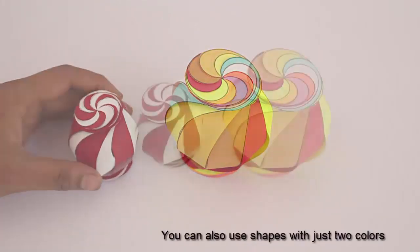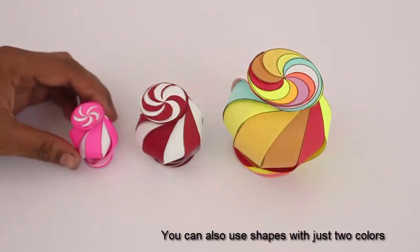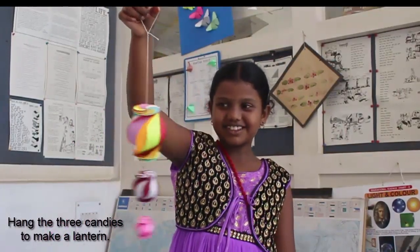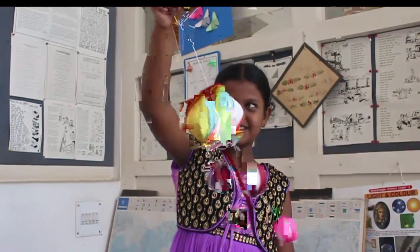Assemble smaller pieces to make smaller candies. The two-color candies also look very pretty.